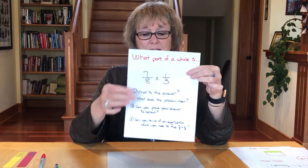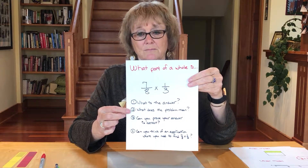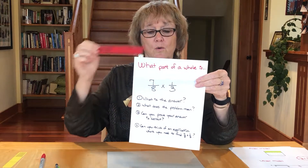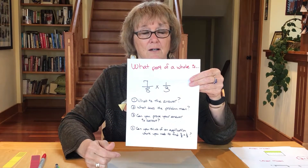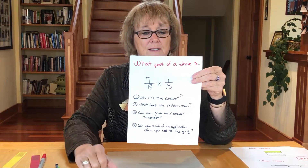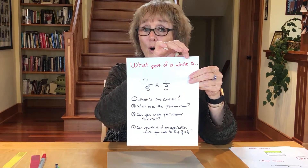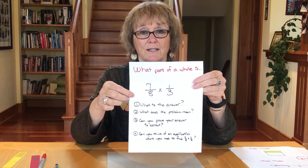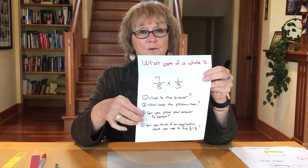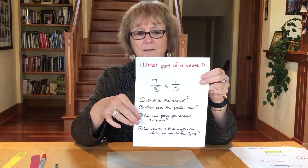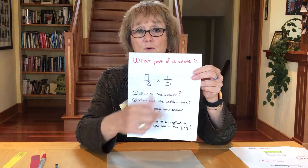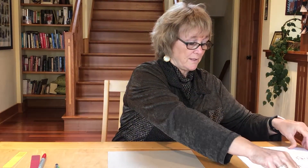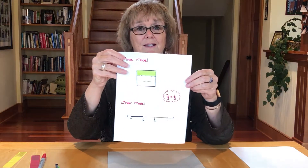What is the question really asking? It's really asking what part of a whole — what part of this whole is seven-eighths of one-third. It's not simply asking seven-eighths of one-third; it's asking what part of the whole is seven-eighths of one-third. I need to remember my units. I'd like to show you a couple of models to prove why seven-eighths times one-third is indeed equal to seven-twenty-fourths, using an area model as well as a linear model.